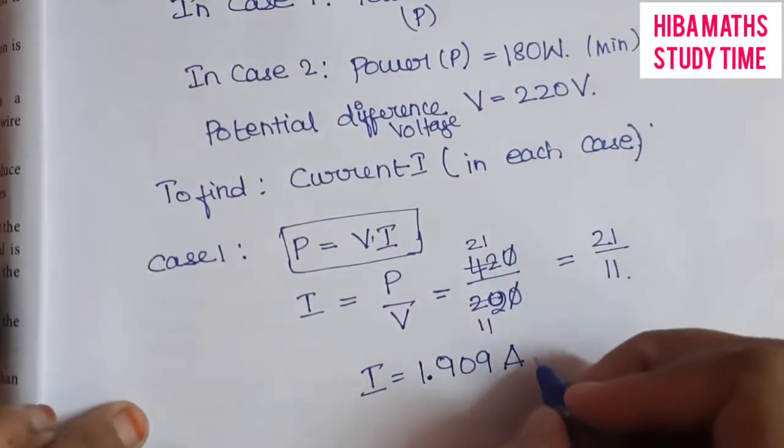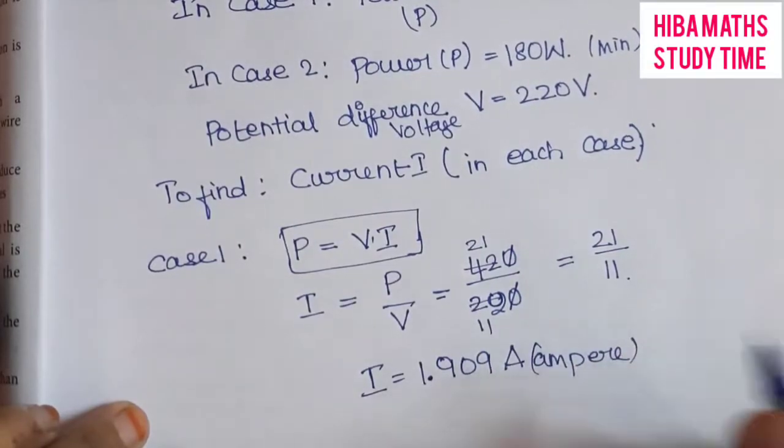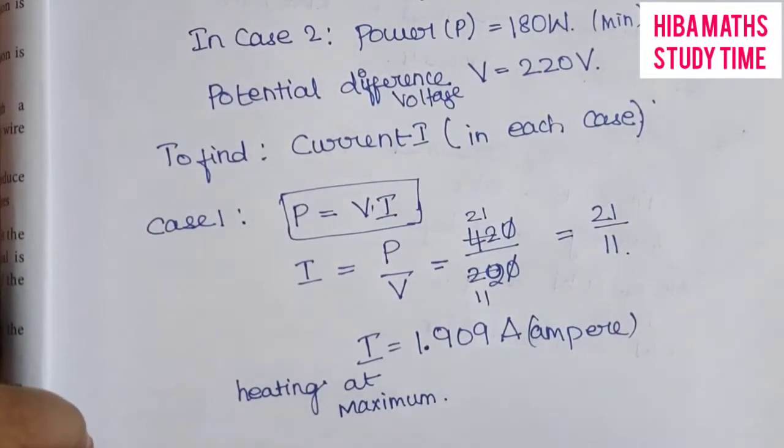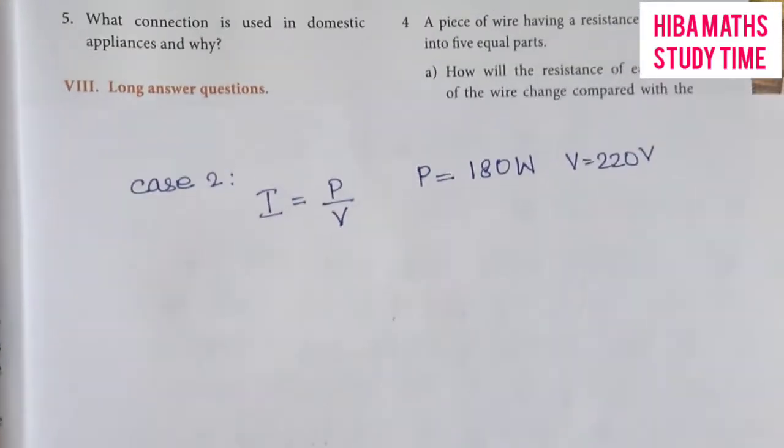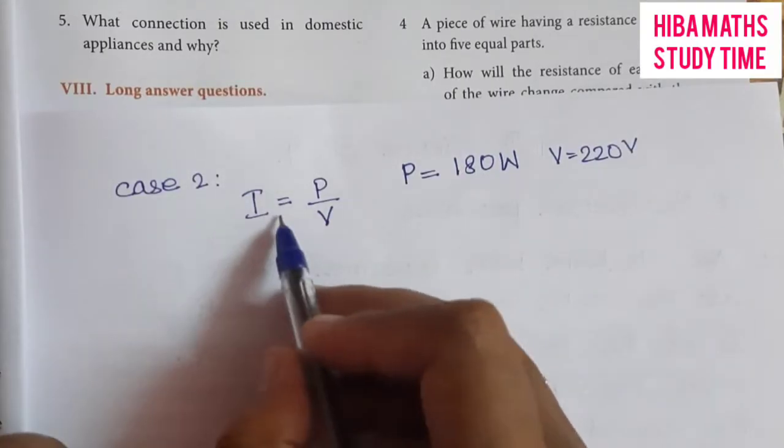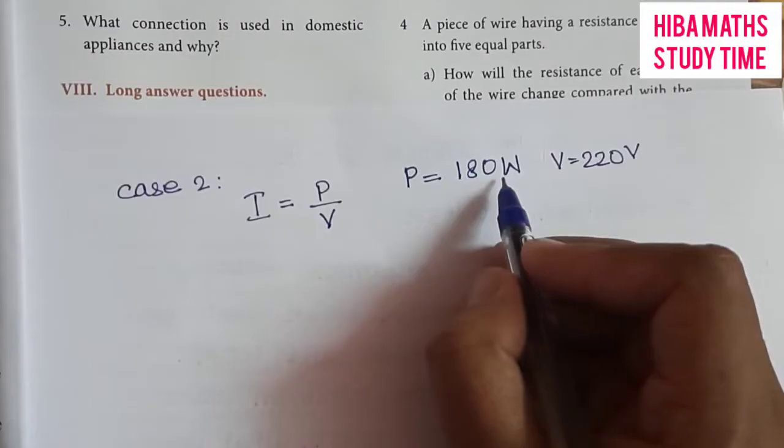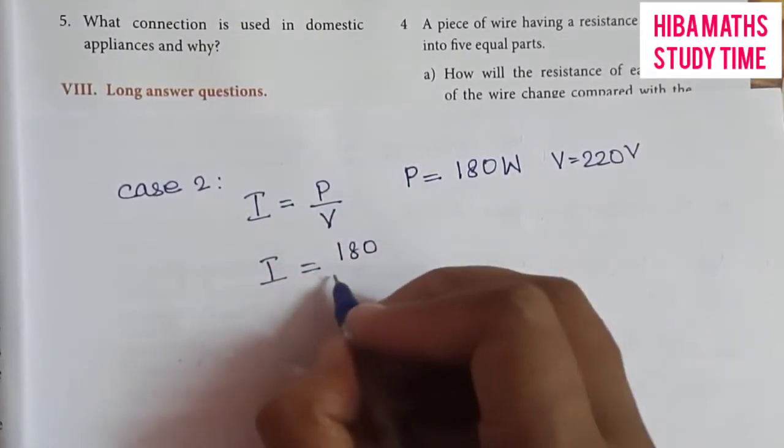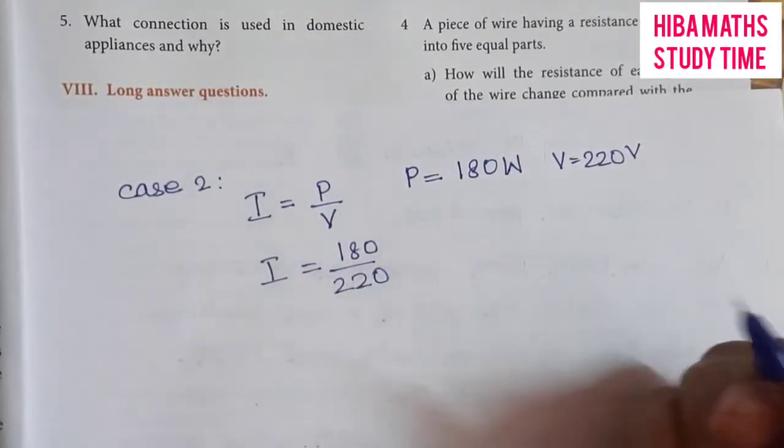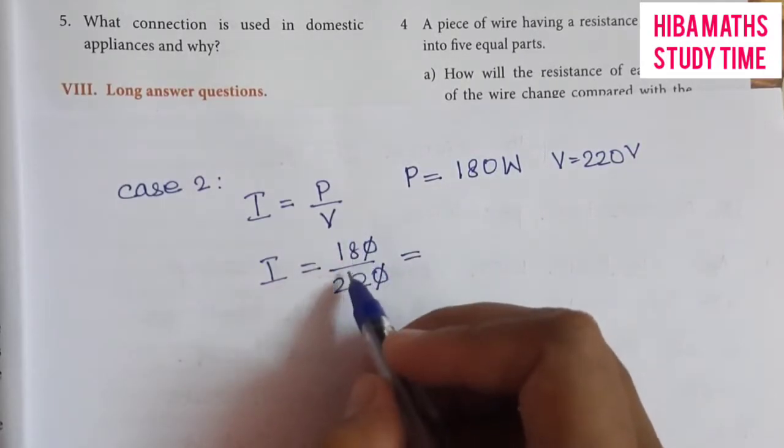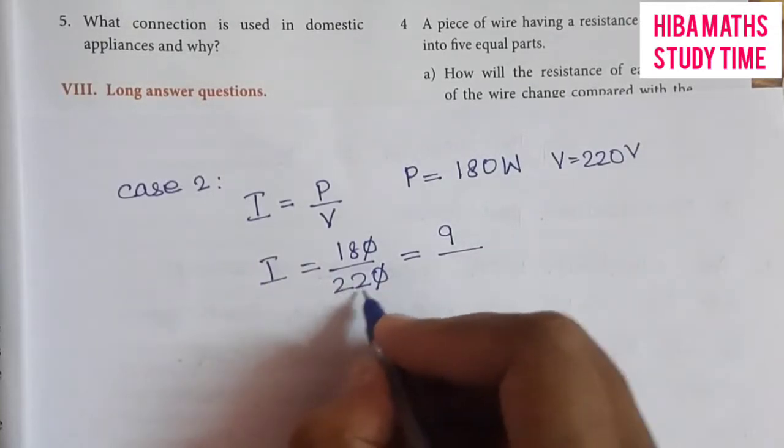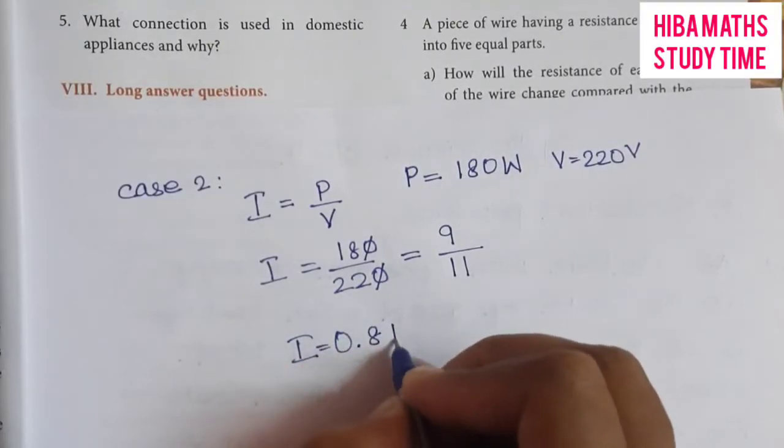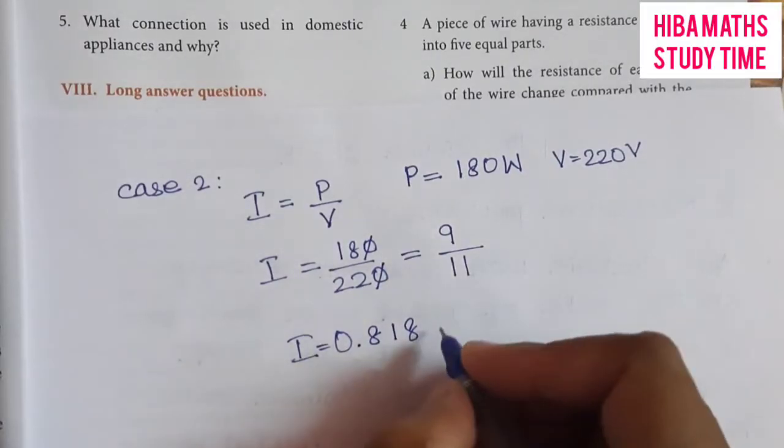I is equal to P by V. P value is 180 watts and V value is 220 volts. So I equals 180 divided by 220. Canceling and simplifying, we get 9 by 11, which equals 0.818 amperes.